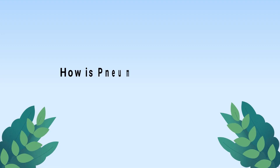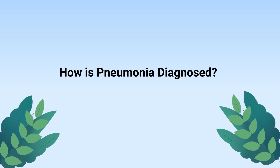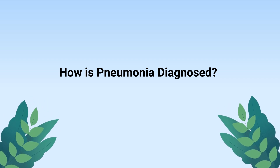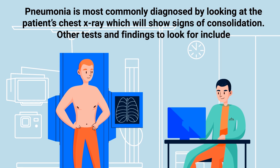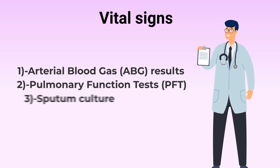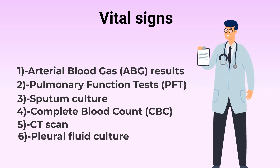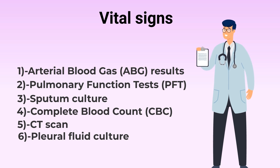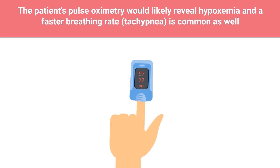Pneumonia is most commonly diagnosed by looking at the patient's chest x-ray, which will show signs of consolidation. Some other tests and findings to look for include vital signs, ABG results, PFT results, sputum culture, complete blood count, CT scan, and pleural fluid culture. The patient's pulse oximetry would likely reveal hypoxemia, and a faster breathing rate is common as well.